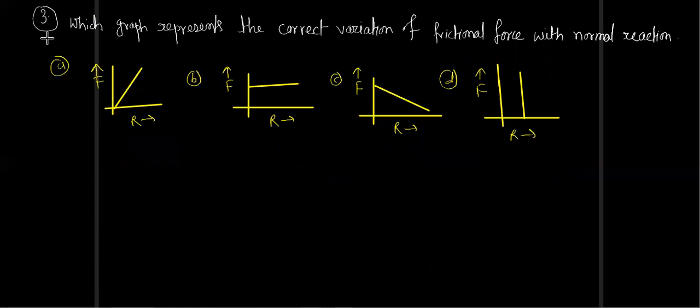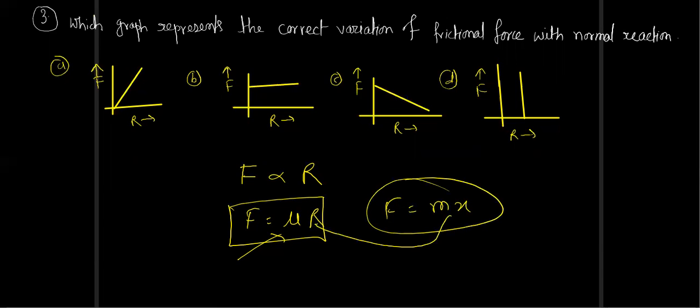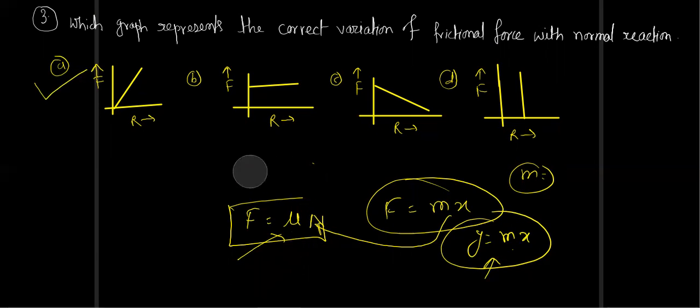Question three: which graph represents the correct variation of frictional force with normal reaction? Frictional force is directly proportional to normal reaction: f equals mu N. This is like y equals mx, where m is the slope. So the answer is a straight line passing through the origin.